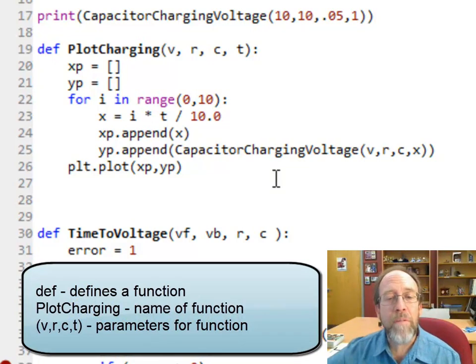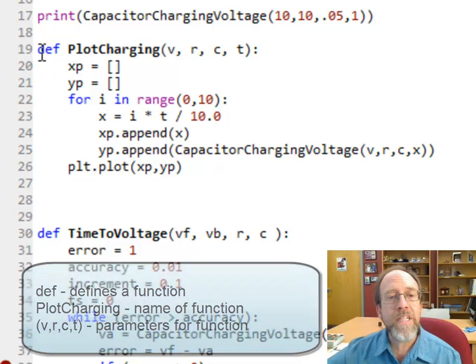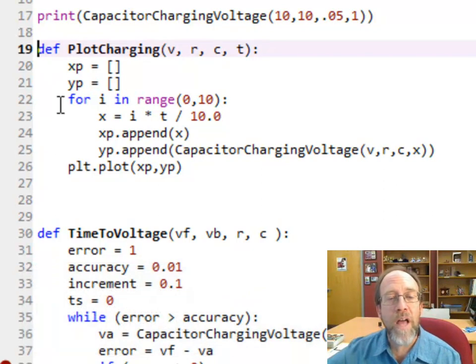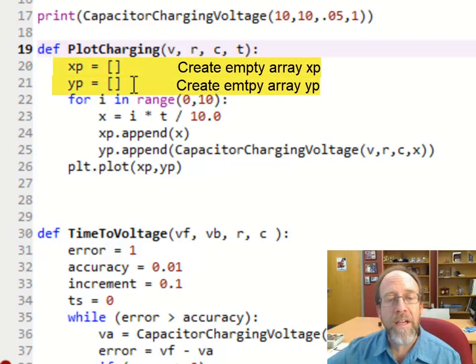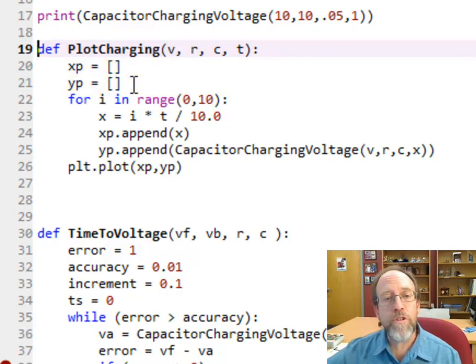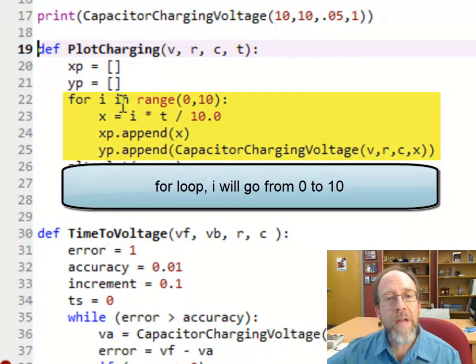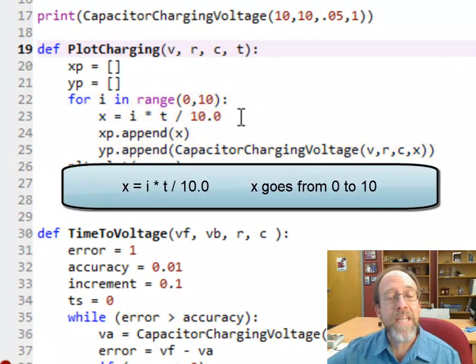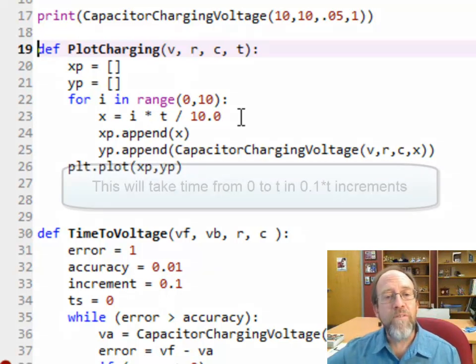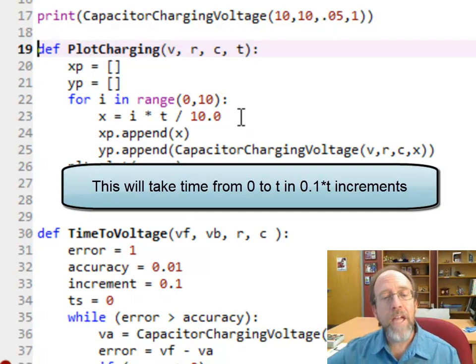I'll show you how easy that is. Down here in my function, my plotting is just plt.plot with the x and the y. xp and yp - xp is an array, yp is an array. The thing is I actually got to make that array if I'm going to plot the values. That's easy to do. I define this function called PlotCharging with v, r, c, and t. Then I'm going to create a blank xp and a blank yp as an array. xp equals bracket bracket is a blank empty array, yp equals blank blank is an empty array.